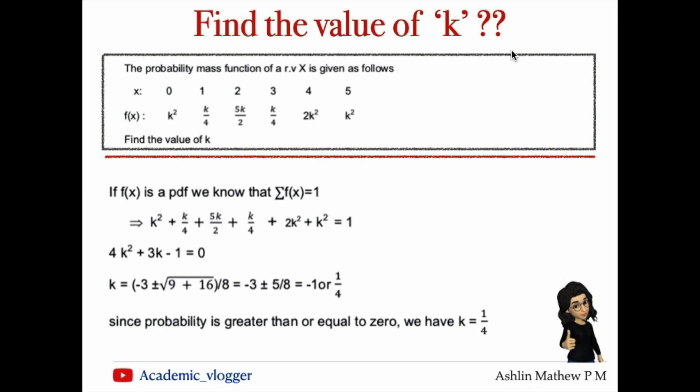To find the value of k, we can use a property of probability mass functions: the summation of f(x) must equal 1. Using that property,